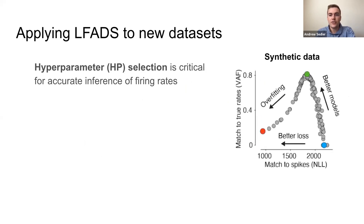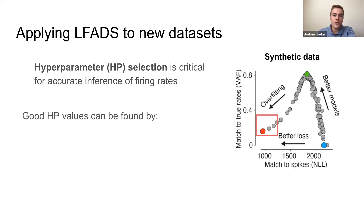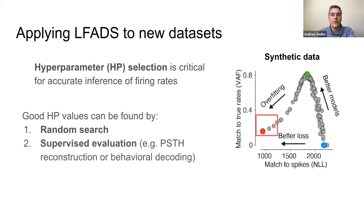For most other models, this would be addressed by training on the order of 100 models with random hyperparameter values and then choosing the one that achieved the lowest validation loss. However, using synthetic data with known firing rates, we've shown that LFADS models with the best validation loss are actually overfit to spikes, resulting in noisy representations that don't reflect the underlying firing rates. So in practice, we don't have true firing rates, so identifying high-performing models on real data requires following the random search with supervised evaluation using indirect measures of model quality.